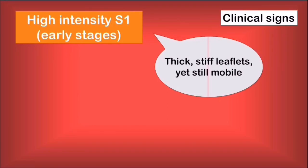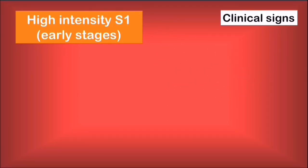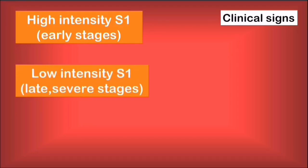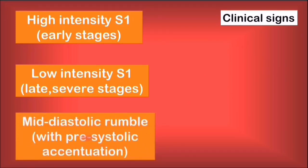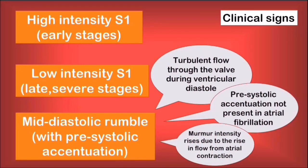In terms of clinical signs, we can hear a definitive change in the first cardiac sound depending on the stage of the stenosis. In early stages of mitral stenosis, there is a high-intensity S1 caused by thick, stiff leaflets which are still mobile. In late, severe stages, the thickening and calcification are too advanced and the mitral leaflets become rigid and lose their mobility, resulting in a low-intensity S1. Furthermore, there is a mid-diastolic rumble caused by the passive turbulent flow of blood through the valve during ventricular diastole. Afterwards, atrial contraction occurs, pushing more blood into the ventricle through the narrow valve, which results in a pre-systolic accentuation of the rumble. Important to note is that this pre-systolic accentuation disappears in case of atrial fibrillation, since atrial contraction is no longer effective.